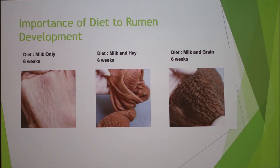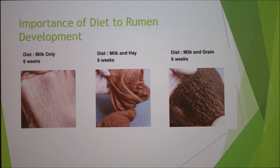The instructor noted that the presenter made a point about developing musculature, and emphasized that a healthy rumen is a mobile rumen — a sick cow with no rumen contractions is a bad sign. The instructor found the visual comparison of rumen development under different diets very clear and remarkable, noting the animals had been slaughtered and were on different diets.